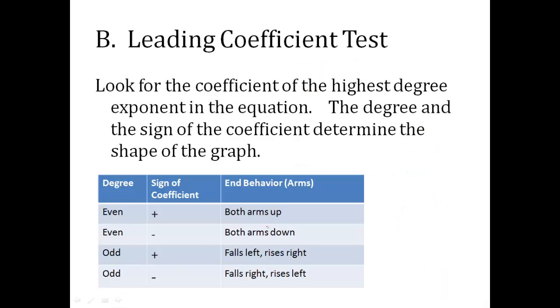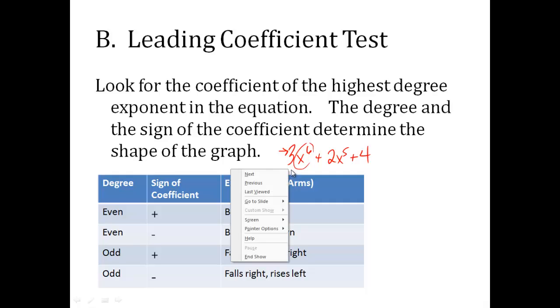The leading coefficient test. Now you look for the coefficient of the highest degree in the equation. The degree and the sign of the coefficient determine the shape of the graph. So if I go back to what we just did, we said this is the highest degree. Now this coefficient right here tells me something else about it. We know that both arms are going to go in the same direction because it's even, but this 3 will tell me more.